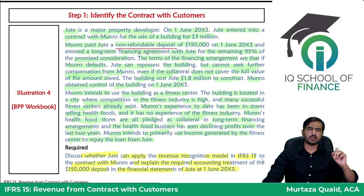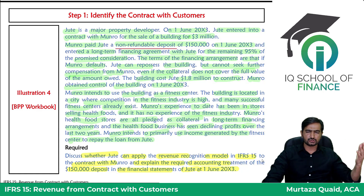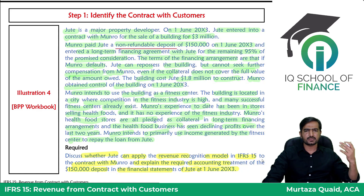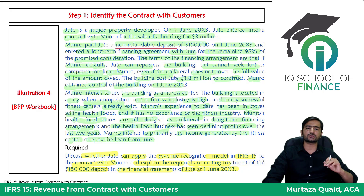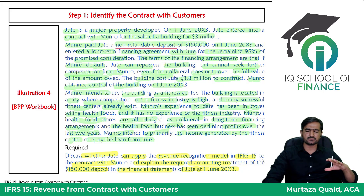The major problem is the customer's ability and intention to pay. It is not probable that Jute will collect the full consideration. The store business has declining profits, and the gym fitness center faces tough competition already in the market, so it is not probable that the consideration will be fully recovered.